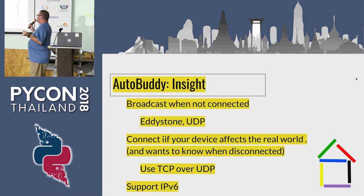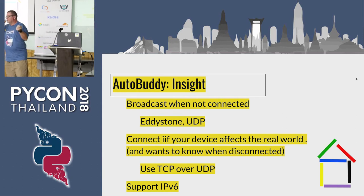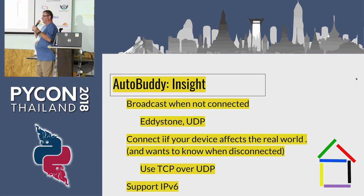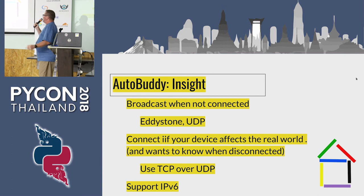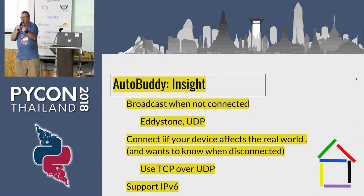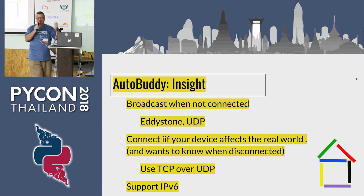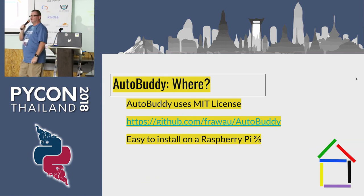I came up with the idea that there are several types of devices. Some affect the real world — like a light: if it turns off at night, you're going to hit something. Others do not affect the real world directly — if you click a button, you just click it, that's it, there's no physical effect by itself. So the idea is that when a device comes into the scene, it needs to broadcast to announce itself. You only connect if it affects the real world, and you should use IPv6.